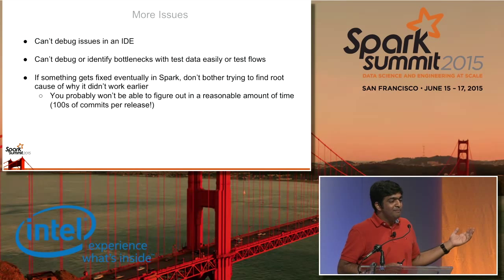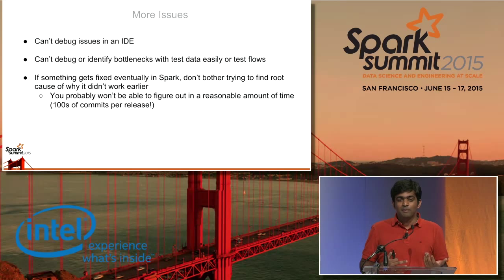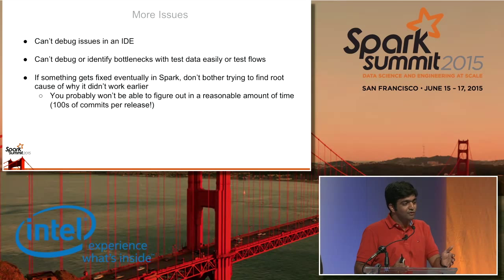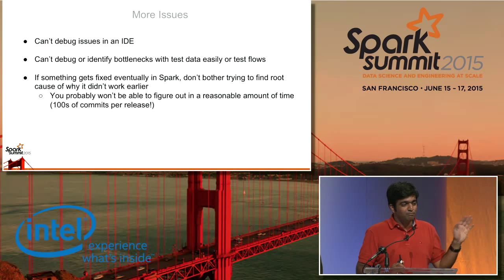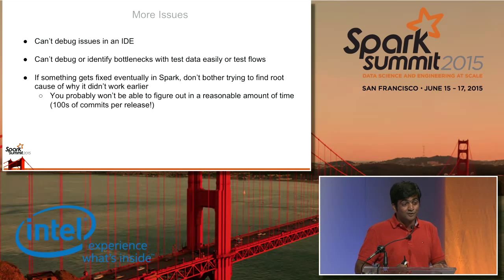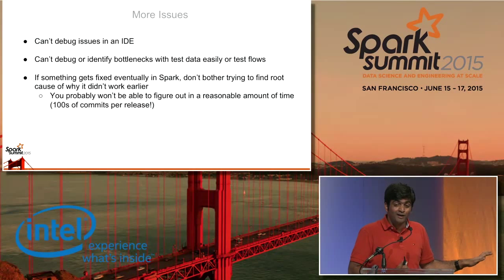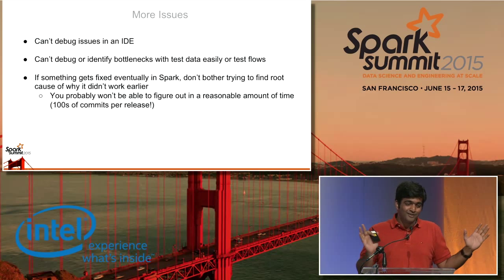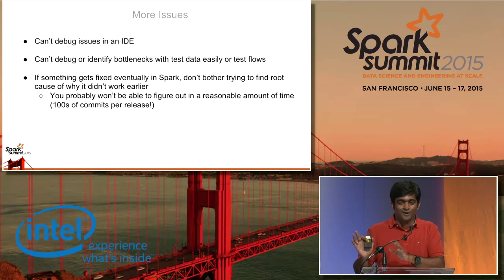We learned a very important lesson that I'm fairly sure many people in this room agree with: if something gets fixed in a future version of Spark — like you upgrade from 1.3 to 1.4 and suddenly a problem goes away — don't bother trying to figure out why it was not working in 1.3. About 1,000 commits go in between 1.3 and 1.4; you're probably not going to be able to figure it out. I work on Spark, I contribute code to Spark, and I can't figure out how half the things got fixed. So just upgrade to the newer version and be happy with it.